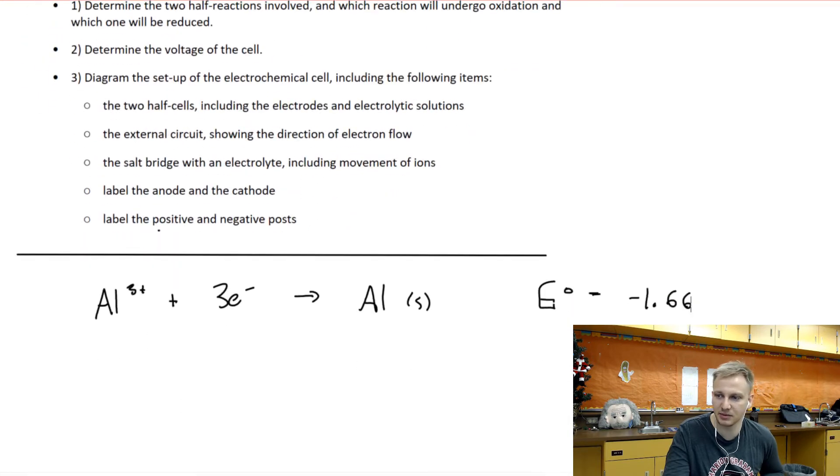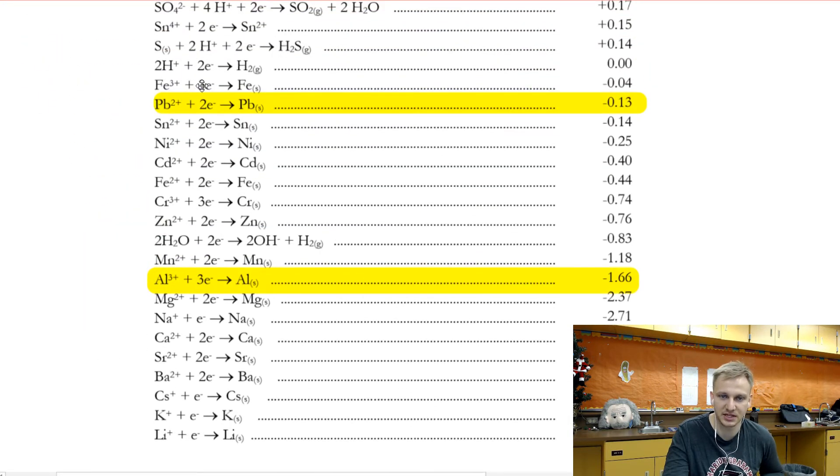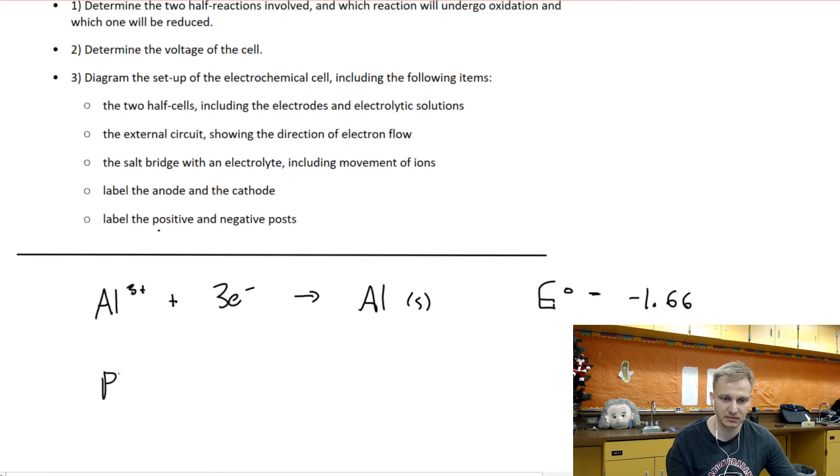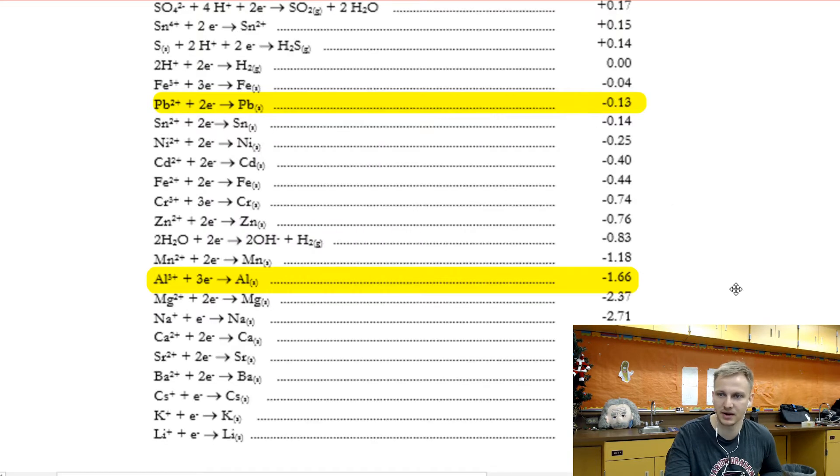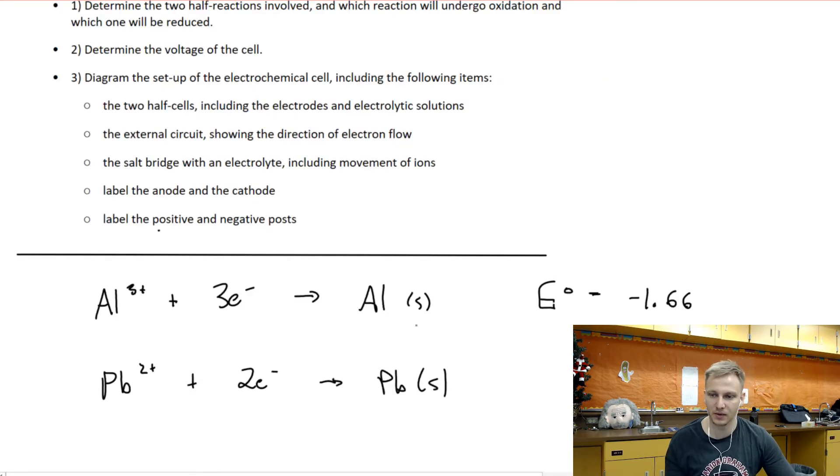The other one that we have is this PB, PB2+. I have that one highlighted over here as well. We have PB2+ plus 2 electrons reacts to produce this PB solid. PB2+ plus 2 electrons reacts to produce this PB solid, and then our potential difference for that one is negative 0.13. So this E-degree is negative 0.13.